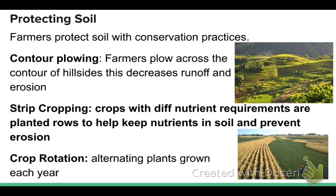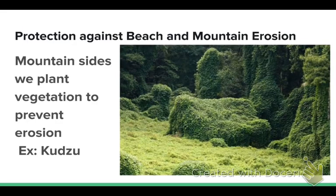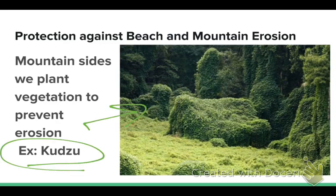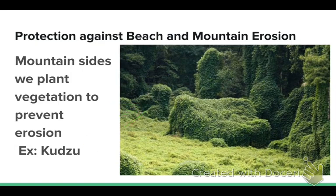To protect against mountain erosion, plant vegetation along the sides of mountains. Vegetation's roots anchor down the soil and prevent erosion. One cautionary example: kudzu was originally planted as cheap, attractive vegetation, but it is an invasive species from Japan and ended up taking over entire mountainsides rather than just controlling erosion.